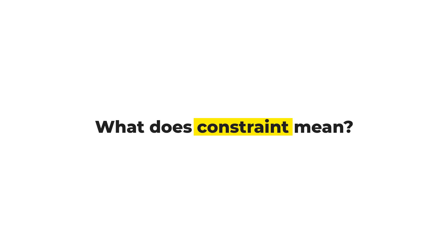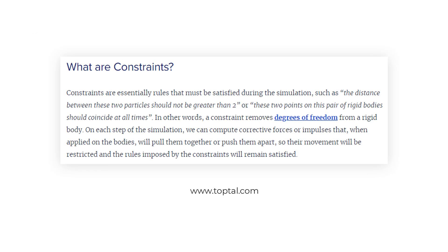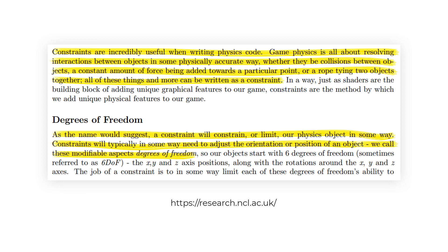What does constraint mean? To put it simply, constraint is the movement limitation imposed by a body over another. It is also referred to as the degree of freedom reduction in a system. For example, if you have a couple of spheres with masses greater than zero, tied with a rope, they will impose a certain restriction on each other's movement — hence we are talking about a constraint.